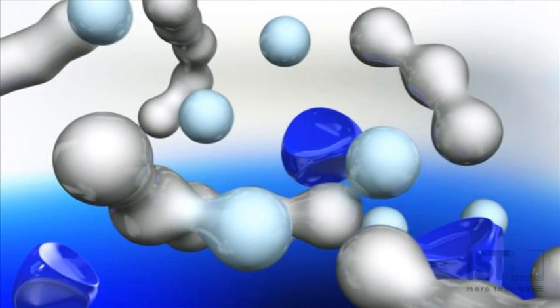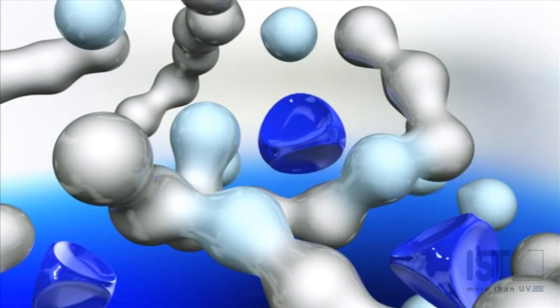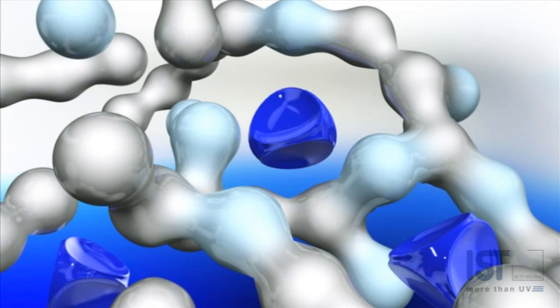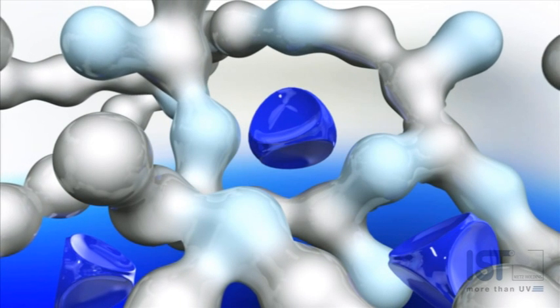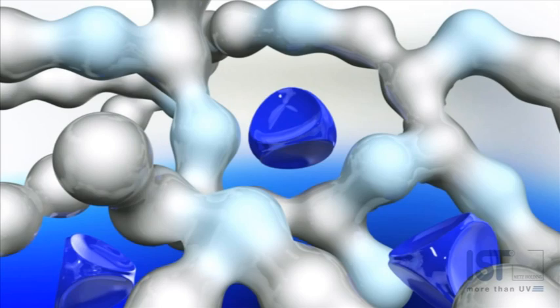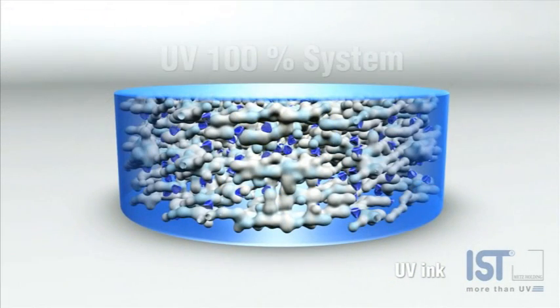Throughout the UV-curing process, these radicals are incessantly attempting to combine with other elements. During this cross-linking process, pigments and other additives are bound in the polymer chain.